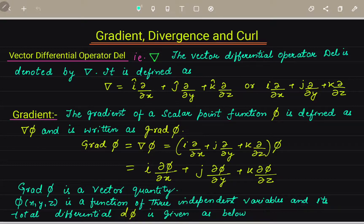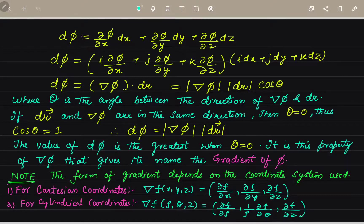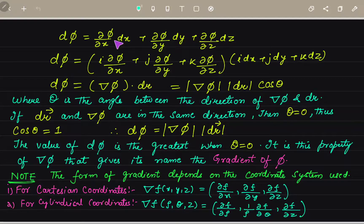Grad phi is a vector quantity. phi(x, y, z) is a function of three independent variables, and its total differential d(phi) is given as: d(phi) equals partial derivative of phi with respect to x times dx, plus partial derivative of phi with respect to y times dy, plus partial derivative of phi with respect to z times dz. This equals i times del-phi/del-x plus j times del-phi/del-y plus k times del-phi/del-z.